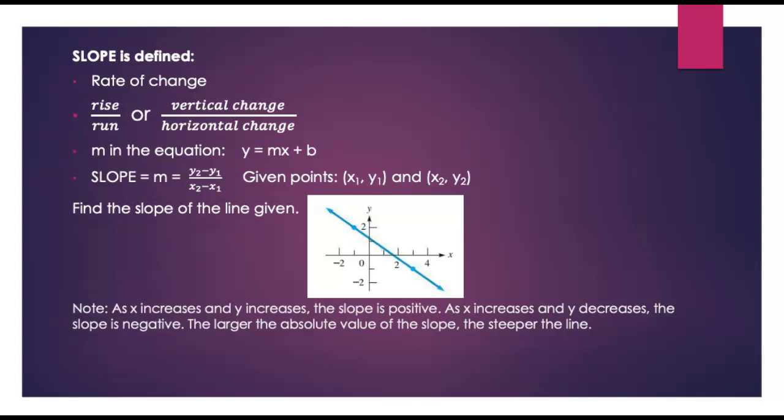It's the m in the equation y equals mx plus b. The m can be determined by subtracting the y values over subtracting the x values for two given points. Just be careful about the orders, y2 minus y1 over x2 minus x1, and that'll give you the slope of the line.